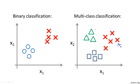this is an example of one class, that's an example of a different class, and that's an example of yet a third class. How do we get a learning algorithm to work for this setting?